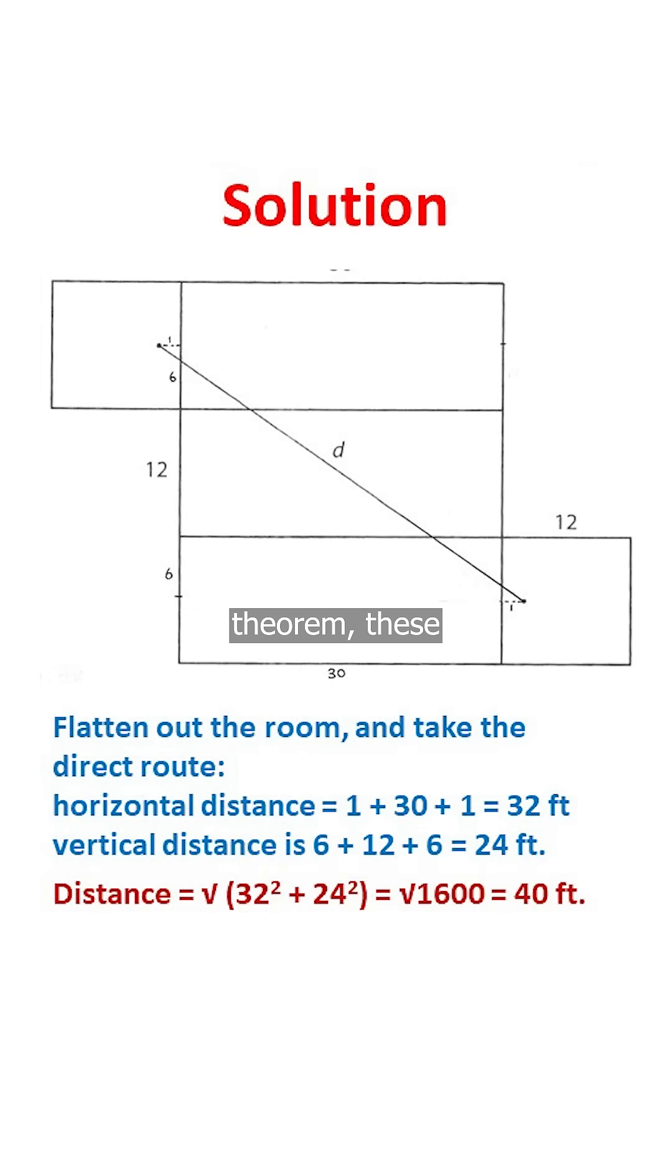By the Pythagorean theorem, these give the spider's distance to be the square root of 32 squared plus 24 squared, which is the square root of 1600, or 40 feet.